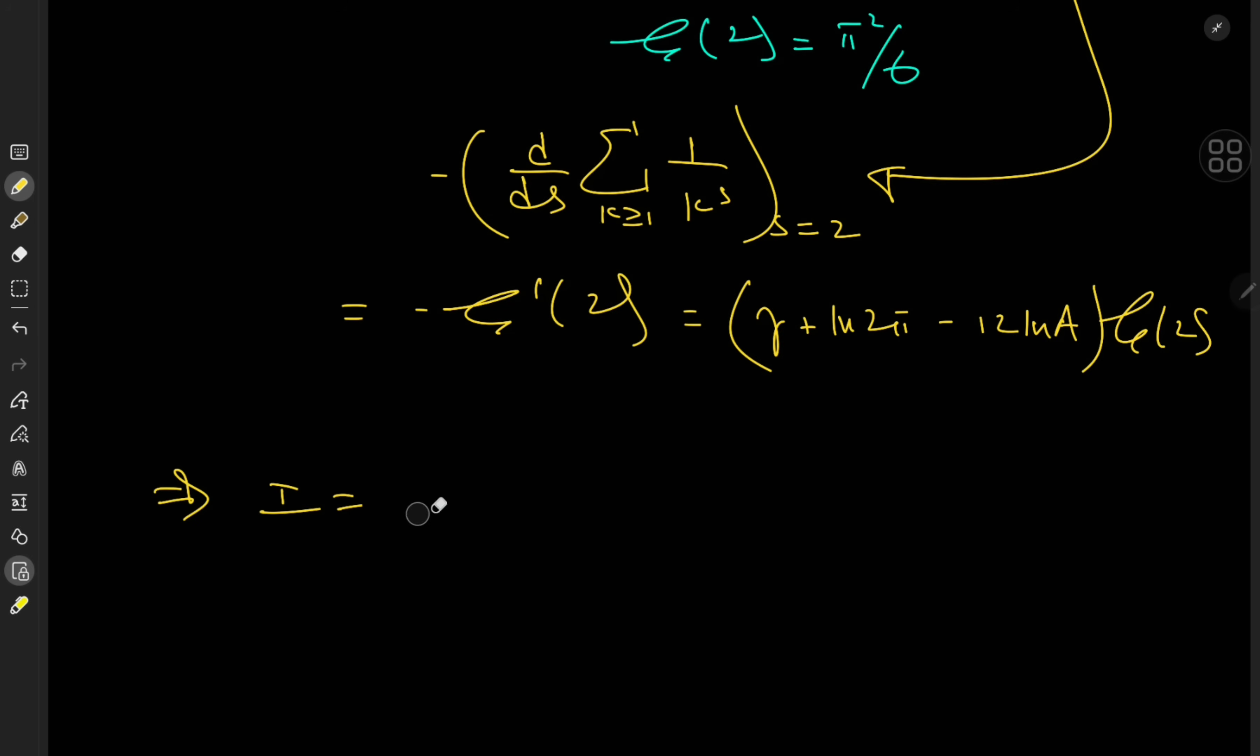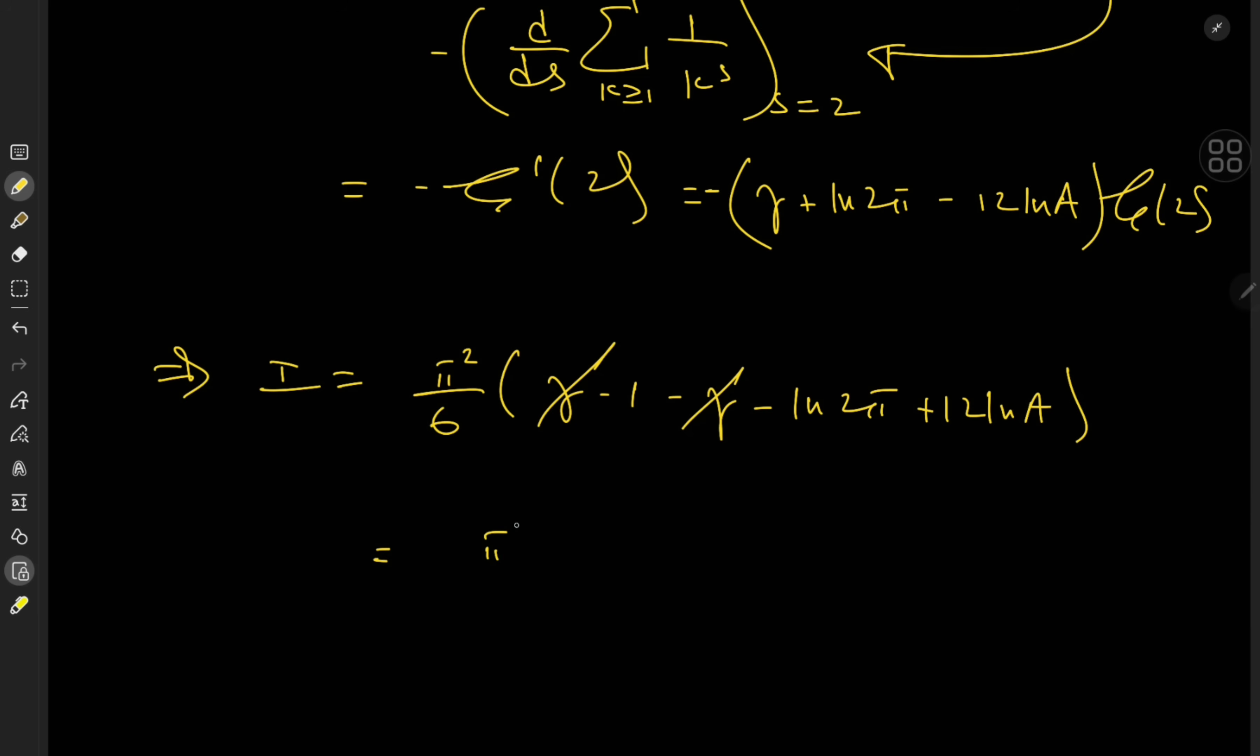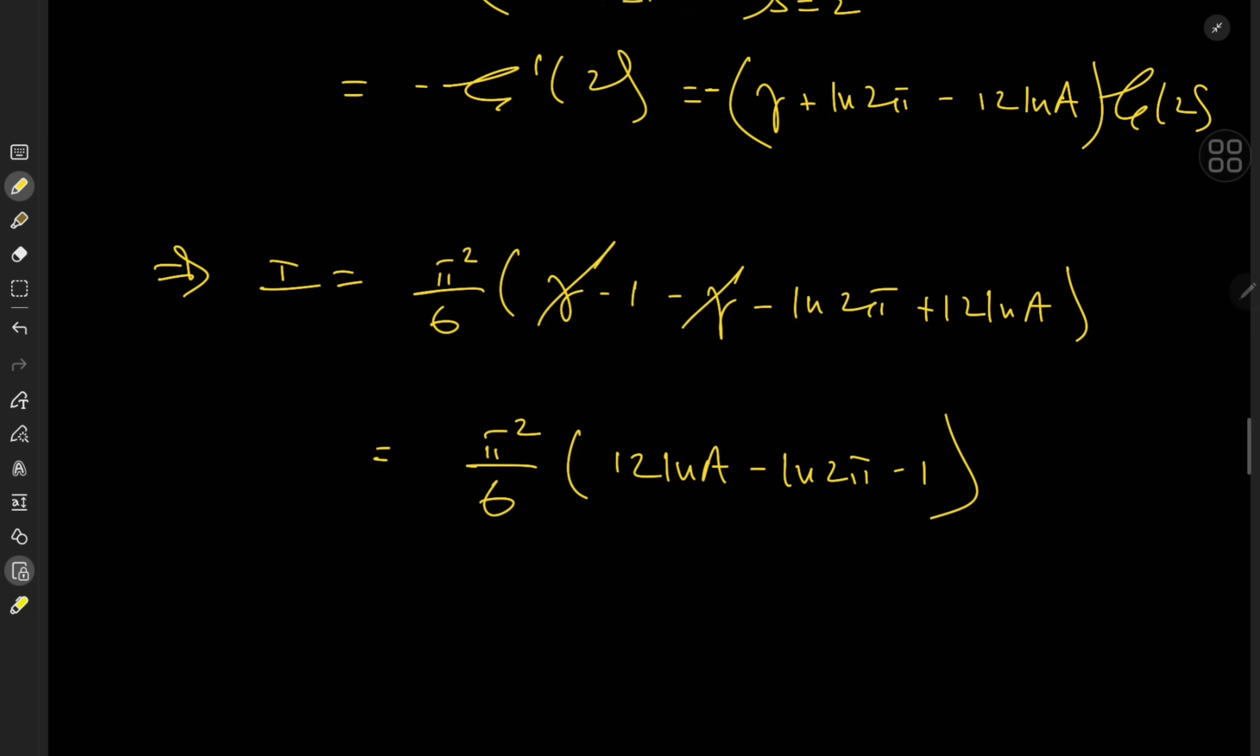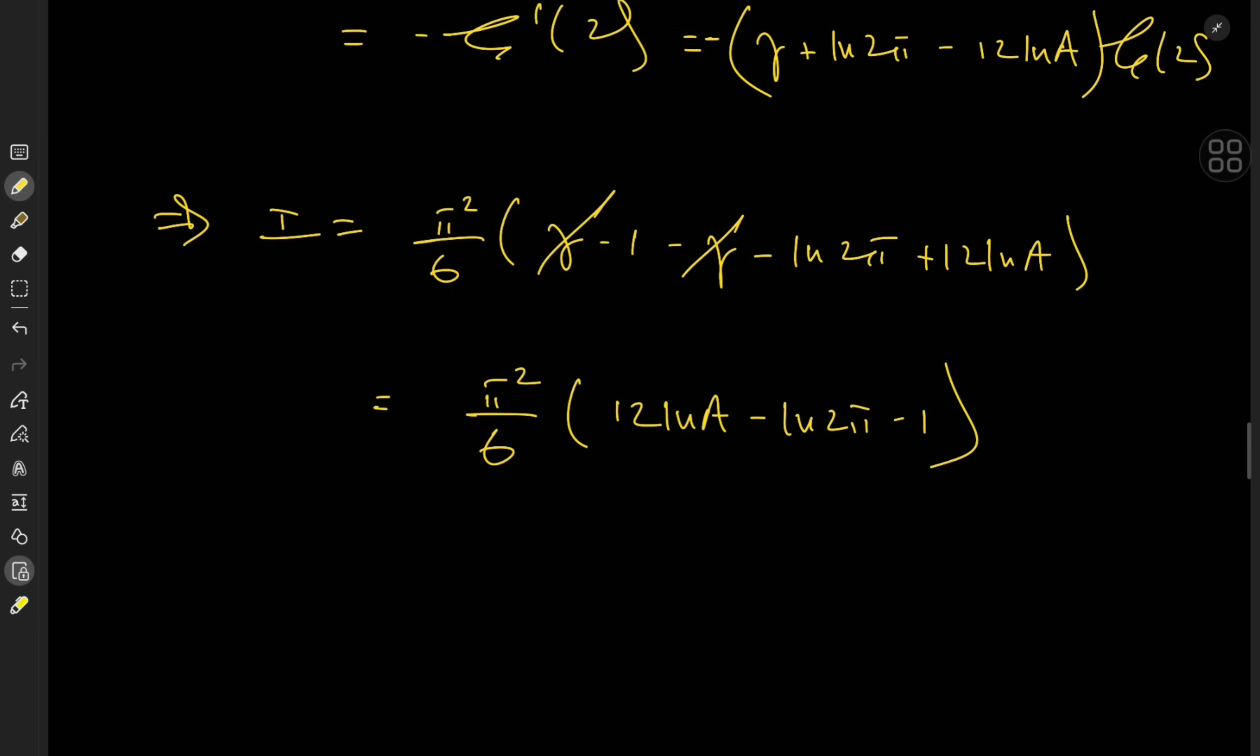So that means we could actually factor out pi squared over 6. So pi squared over 6, gamma minus 1, and what else? Wait, this was supposed to be a negative. Negative sign over there. Minus gamma minus log 2 pi plus 12 times log A. So again, it is sad to see the Euler-Mascheroni constant go, but at least we have some really nice-looking constants. I mean, we have A and we have log 2 pi and we have 1. And I could just write this in a rather absurd way, but hey, this is Maths 505 we're talking about. So we can write this as pi squared over 6 times log of A to the 12th power over 2 pi E, which doesn't really look half bad, does it?